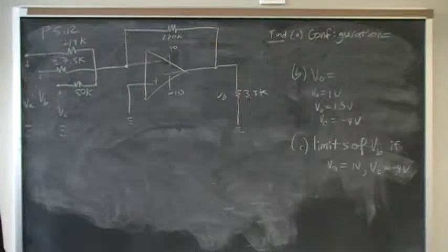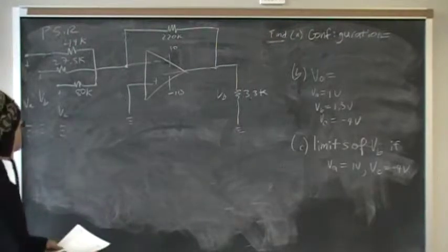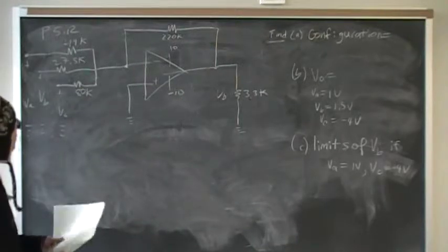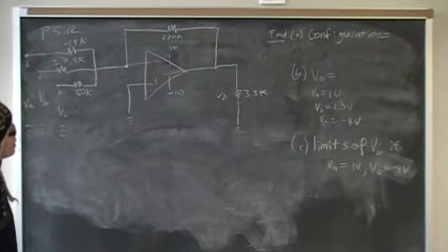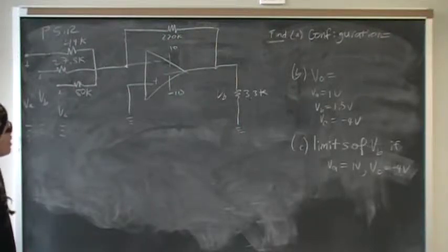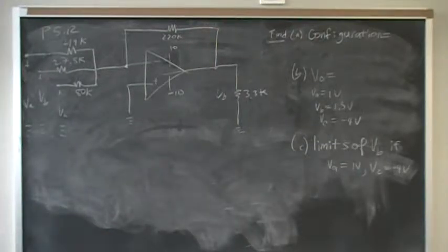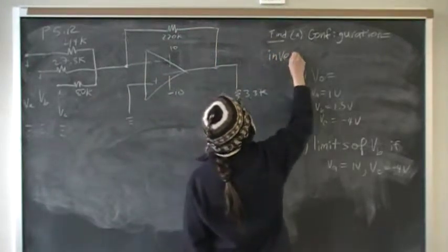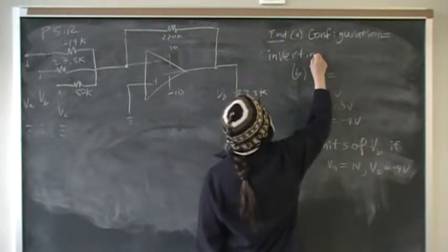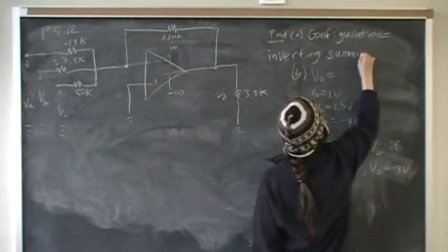In part A, if you look in your textbook, this looks exactly like figure 5.12. We have three signals coming in to the negative terminal, and the configuration is a summing op amp. This is an inverting summing amplifier. It's inverting because the signals are entering the negative terminal.